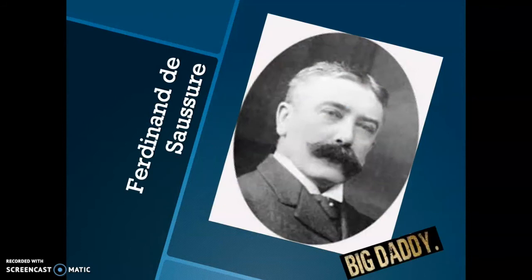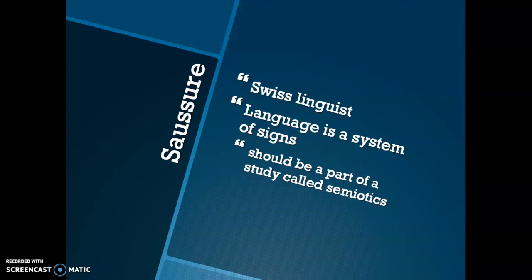So now let's look at the big daddy of semiotics. This person is Ferdinand de Saussure. He was a linguist. His works were actually published posthumously in 1916. He was a linguist and he studied languages, and what he said was that language is actually a system of signs, so it should be studied as a part of semiotics. Like we said, semiotics is a study of signs and symbols, and he said that language is also a sign — so why isn't linguistics being studied as a part of semiotics?